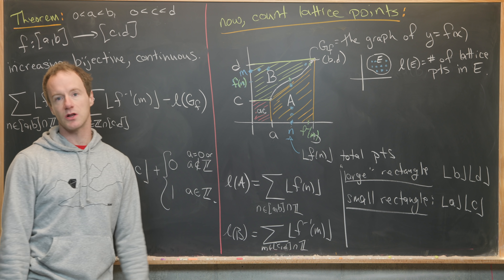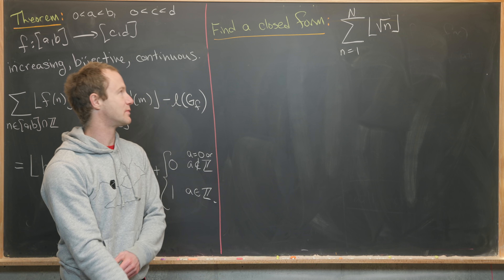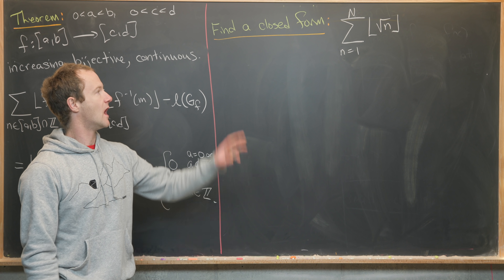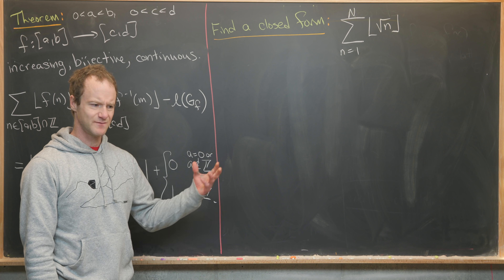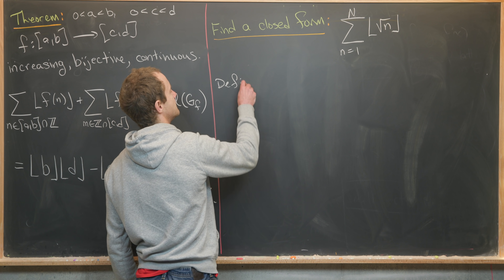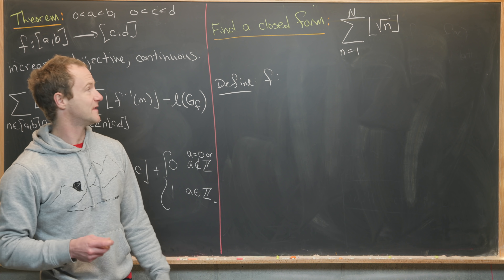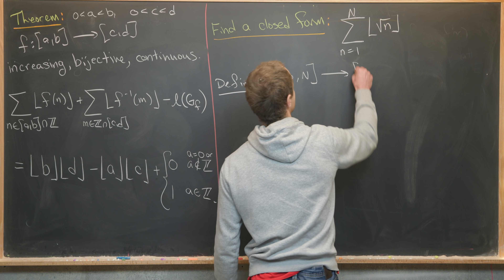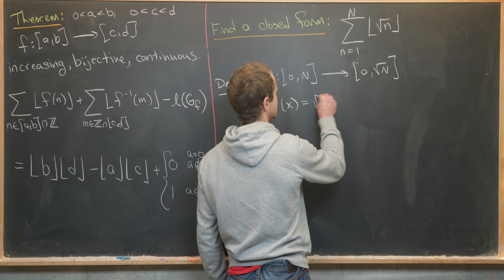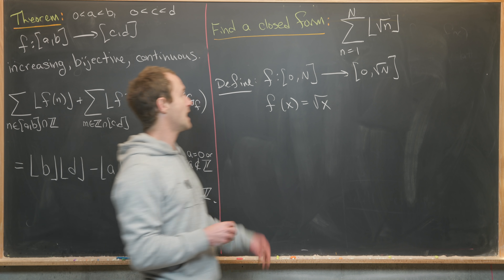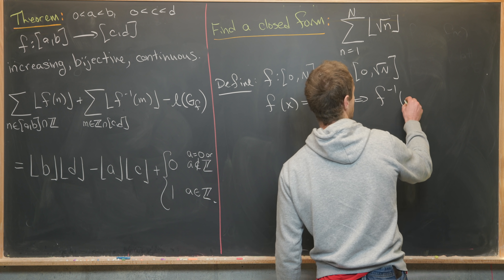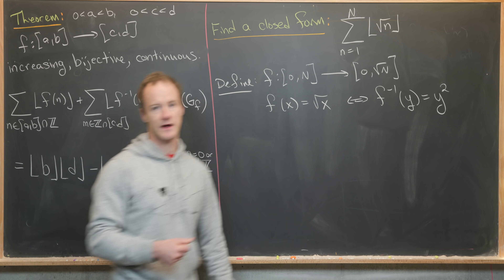This is a discrete version of the area-integral formula from previous videos. Now let's look at an application: finding a closed form for the sum from n = 1 to N of floor(√n). We define f : [0, N] → [0, √N] as f(x) = √x. In this region f is invertible, so f⁻¹(y) = y².